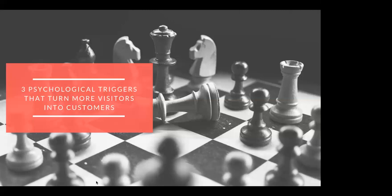These biases determine how we make decisions, what actions we take, who we become friends with, what we eat, how we feel in every given moment, and who we believe. As Wikipedia explains, cognitive biases are systematic patterns of deviation from norm or rationality in judgment. They tend to deviate us from rational and logical decision-making, affecting us in ways we're normally unaware of. We think our decisions are completely rational, but they're affected by these biases.